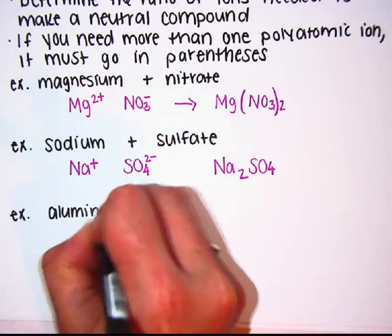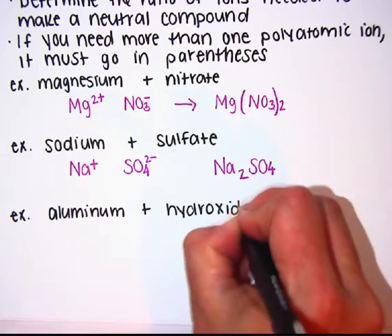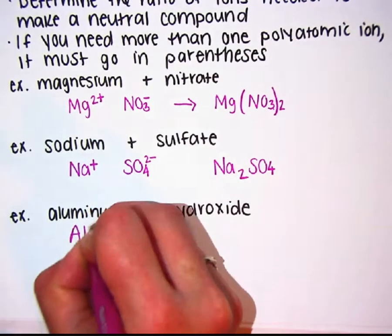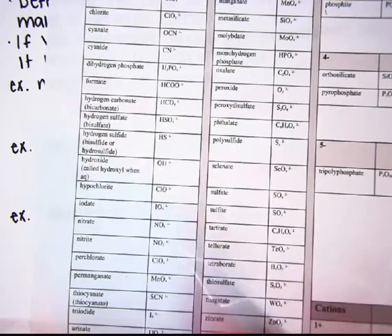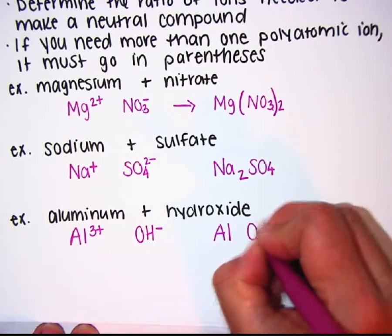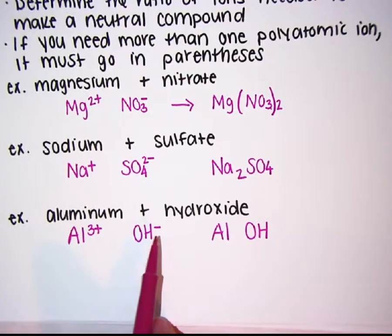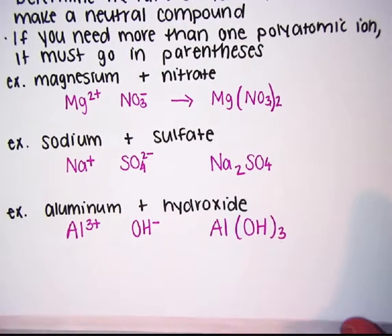Next: aluminum bonding with hydroxide. Hydroxide is OH minus 1. The cation comes first, anion second. Aluminum has a charge of plus 3, so I need a negative 3 to cancel it out. Hydroxide is only minus 1, so I would need three of them. Anytime I need more than one polyatomic ion, it goes in parentheses. The number of ions needed goes outside the parentheses: Al(OH)3.